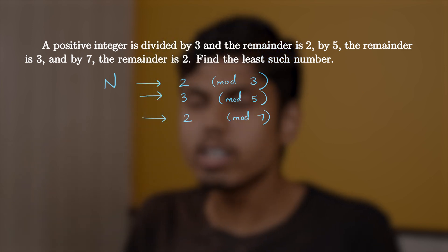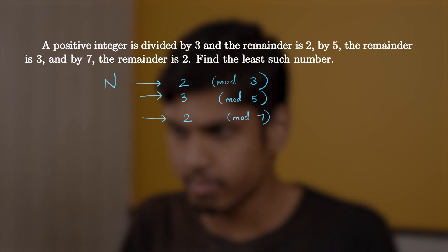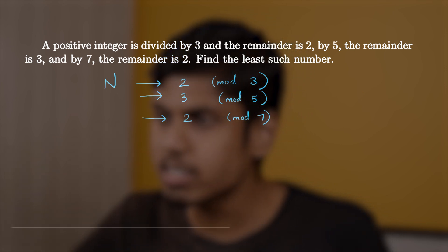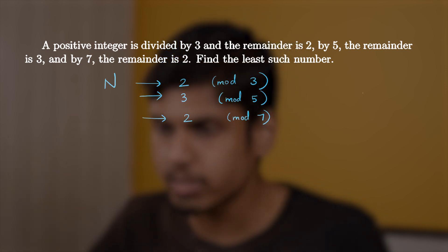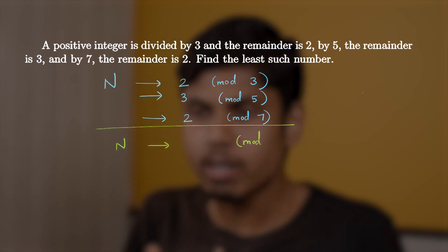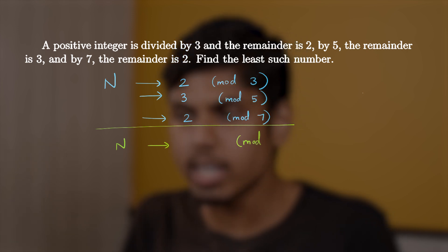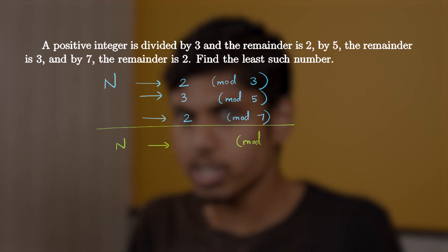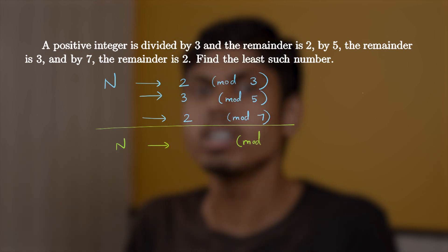And we require only such number n. Now, you know, this Chinese remainder theorem states that there exists a unique solution for this equation. Modulo or the remainder obtained by n when divided by 3 times 5 times 7 is unique. There exists only one solution and that one solution is unique.